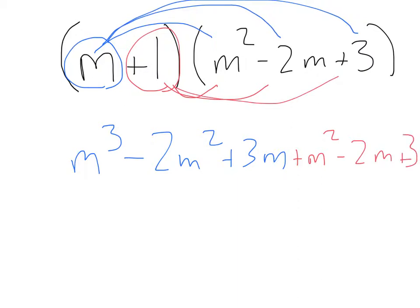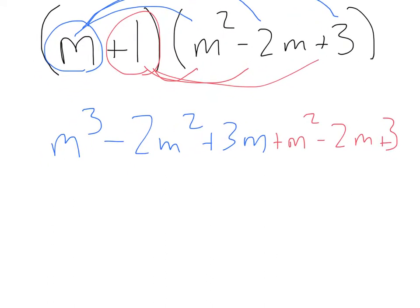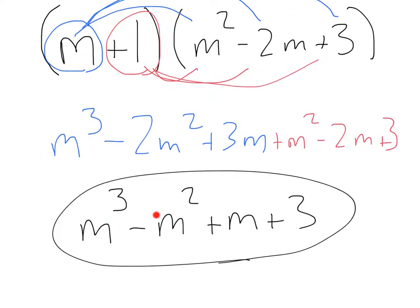From here, you can go ahead and combine your like terms. That should give you an answer of m cubed minus m squared plus m plus 3.